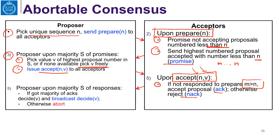Upon receiving a majority of responses at the proposer: if the proposer got a majority of acknowledgements, it decides on v and broadcasts v to all processes. Otherwise, if it gets a rejection in that majority set, then it aborts. This is the algorithm at a very high level.